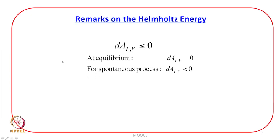The equal to sign is used for a reversible process — at equilibrium, dA at constant temperature and volume should be equal to 0 — whereas for a spontaneous process we use the less than sign. If the process is to be spontaneous, the value of dA at constant temperature and volume should be negative.